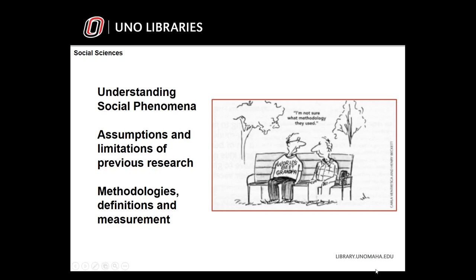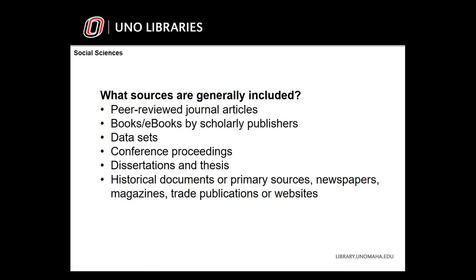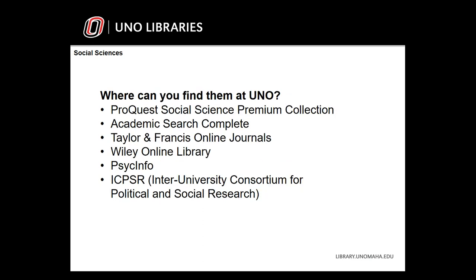There is a wide variety of sources available for topics in social sciences, and the sources you will likely use depend on your topic. For a majority of research topics in social sciences, you will typically use peer-reviewed journal articles, scholarly books, data sets, conference proceedings, dissertations and theses, historical documents, newspapers, magazines, trade publications, and websites. The best databases to use are ProQuest Social Science Premium Collection, Academic Search Complete, Taylor & Francis Online Journals, Wiley Online Library, PsychInfo, and ICPSR — the Inter-university Consortium for Political and Social Research.